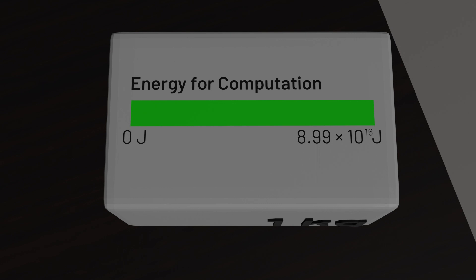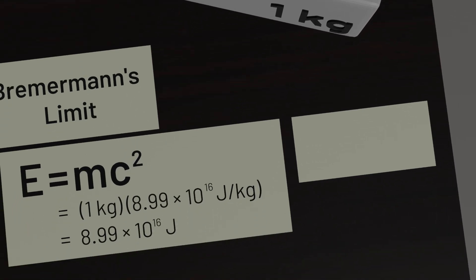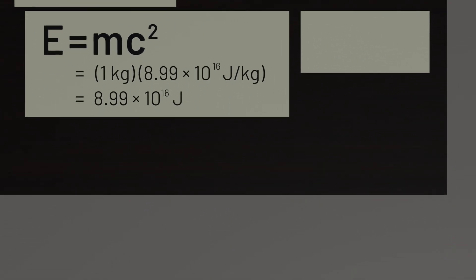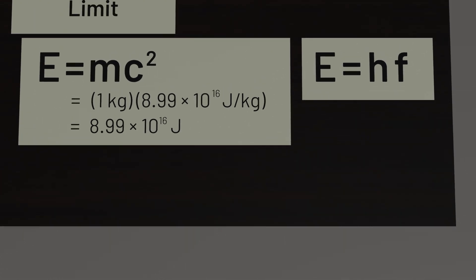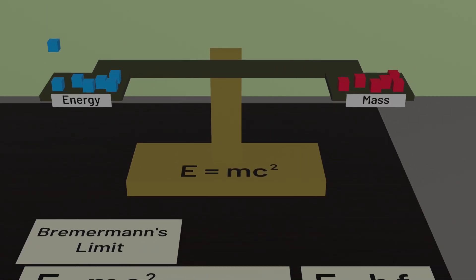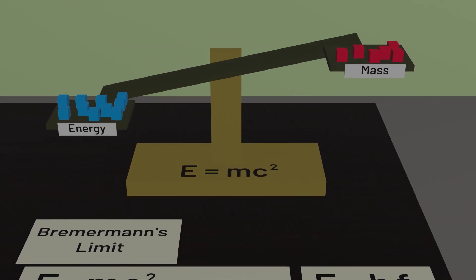So how much information can we actually process? For that we can look to another formula from physics, the Planck equation, which states that the energy of a photon is equal to its frequency multiplied by a constant, the Planck constant. And because every bit of information that we transmit or process needs to have some mass, this frequency ultimately represents an upper bound on how much information can flow through our computational system. Faster processing would require more energy, which would require more mass.